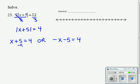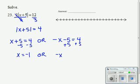And then you just solve your two equations like you normally would. So subtract 5, subtract 5, x would equal negative 1. And I can add 5, add 5, negative x is equal to 9, divide each side by negative 1,